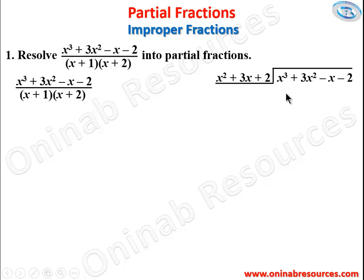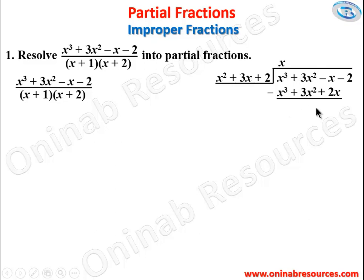x³ divided by x² gives x, our quotient. We multiply x by the divisor: x · x² = x³, x · 3x = 3x², and x · 2 = 2x. Subtracting: x³ − x³ = 0, 3x² − 3x² = 0, and −x − 2x = −3x. We bring down the −2, giving remainder −3x − 2. Since this is less than the divisor, we stop here.